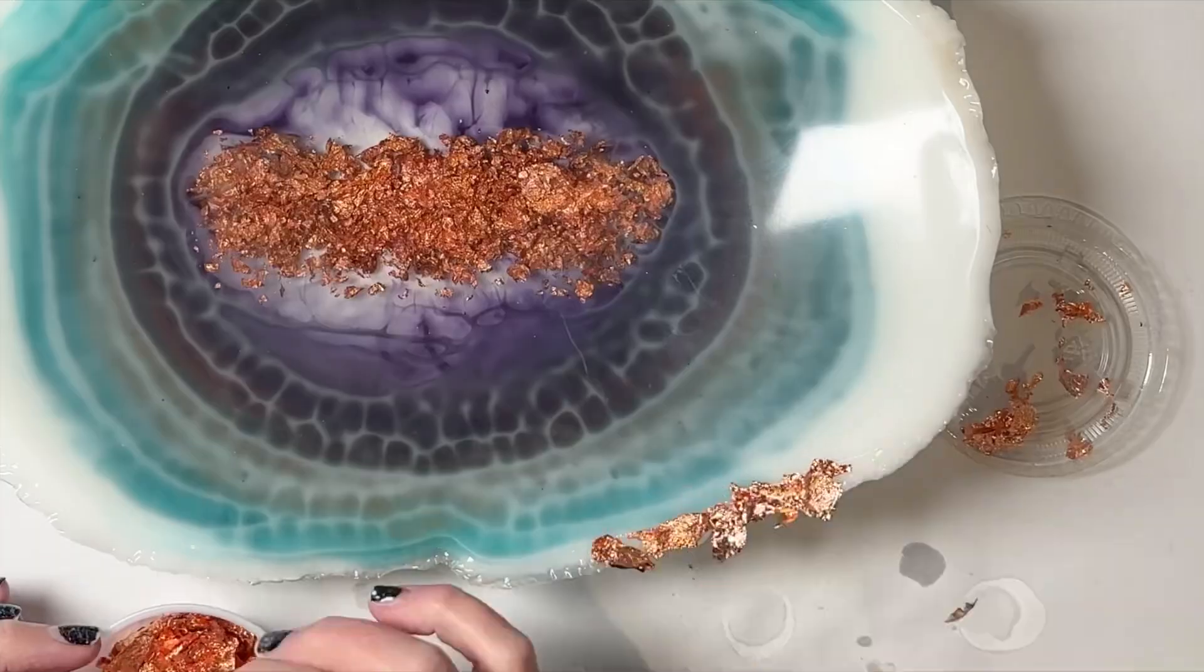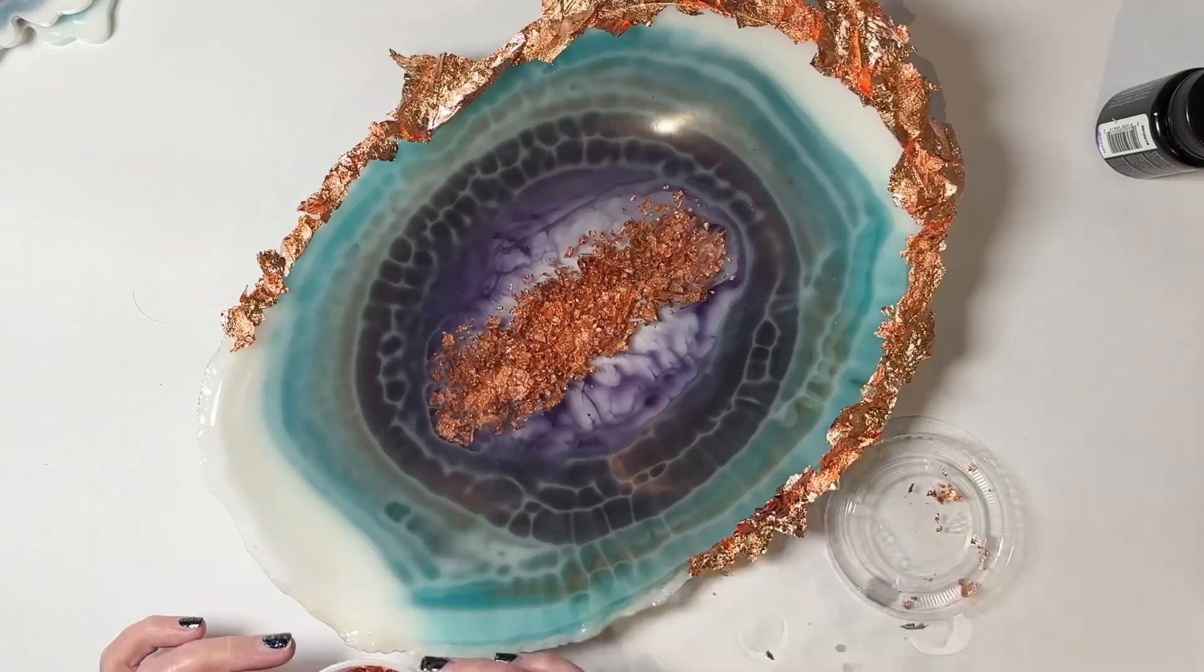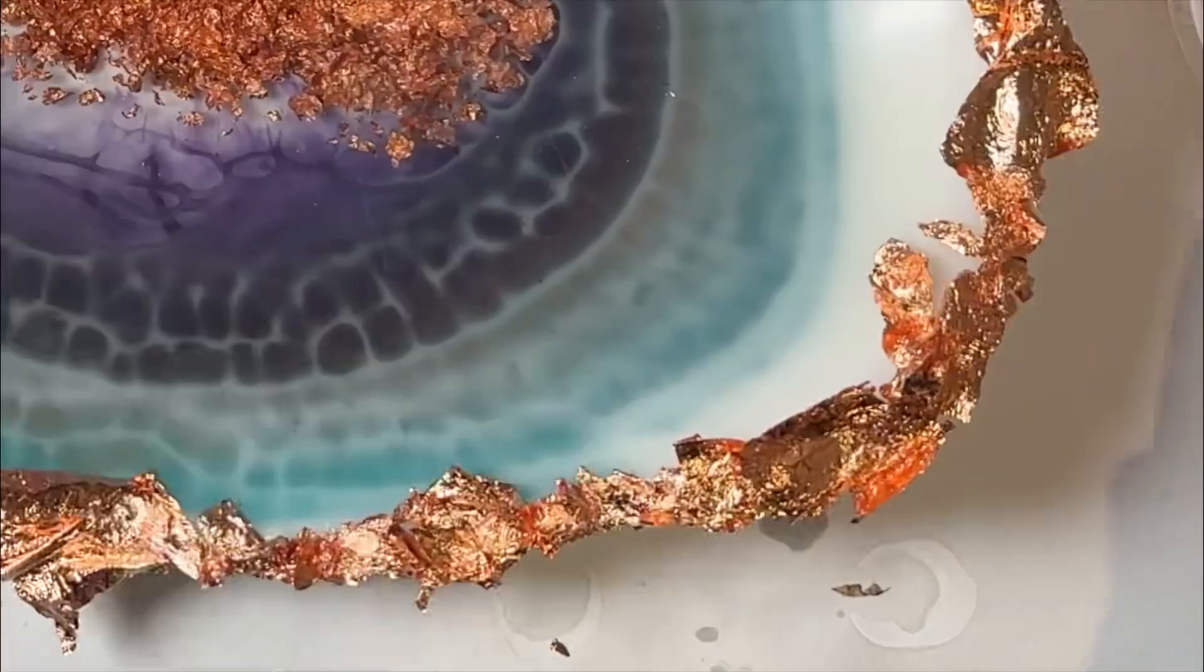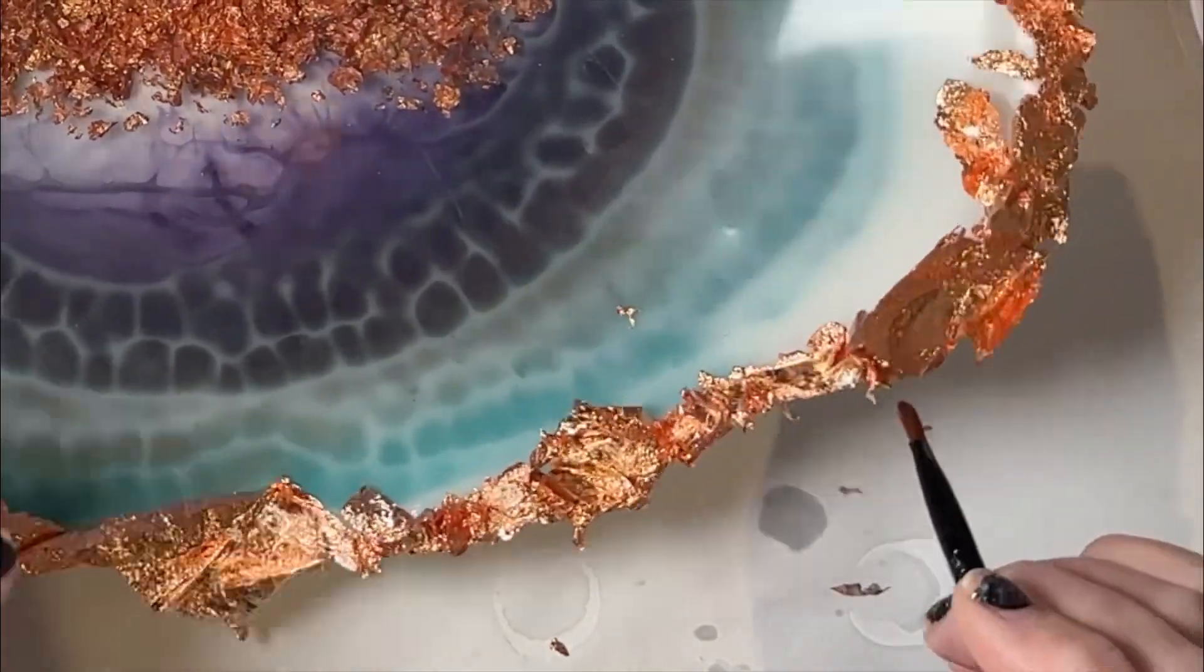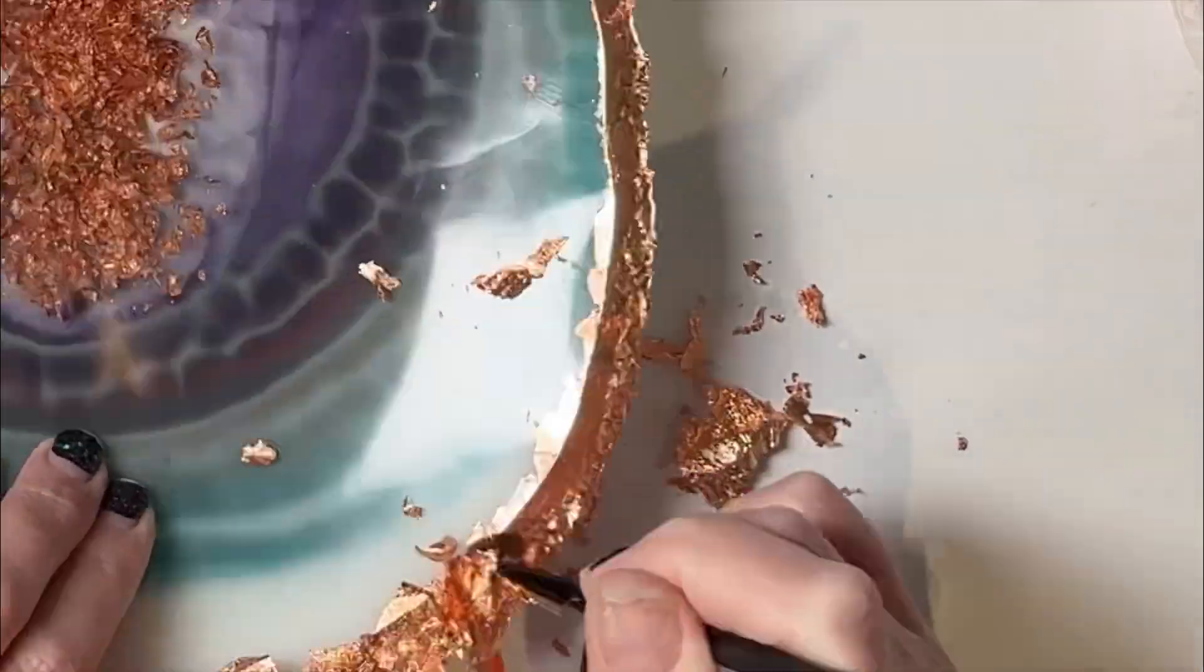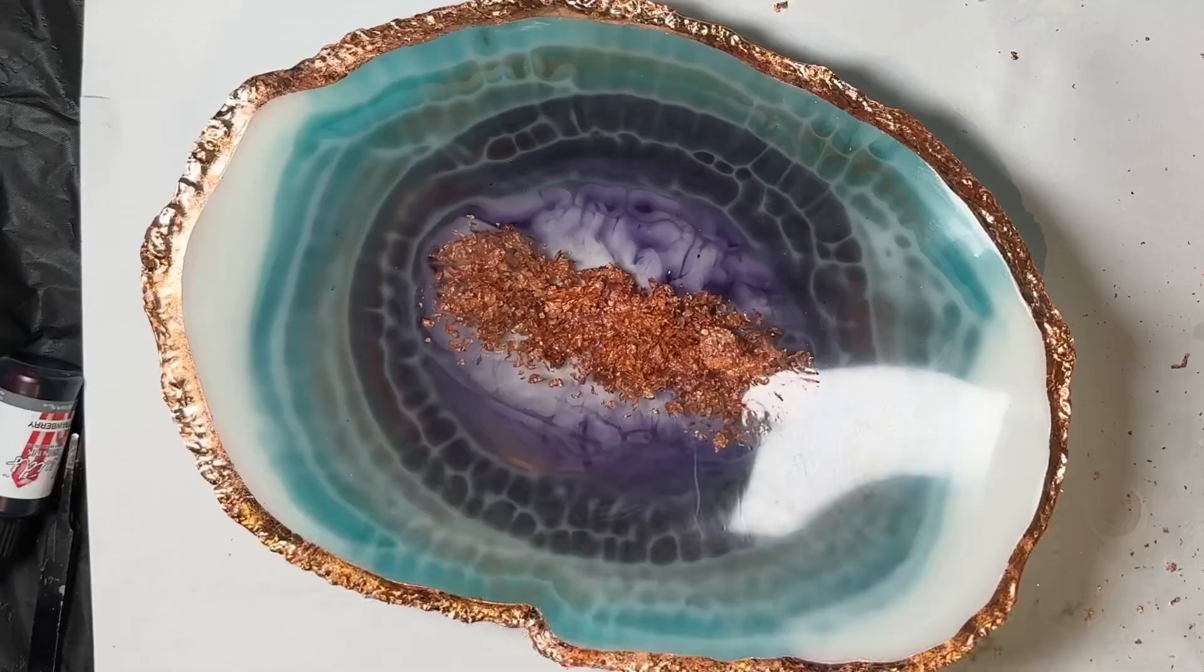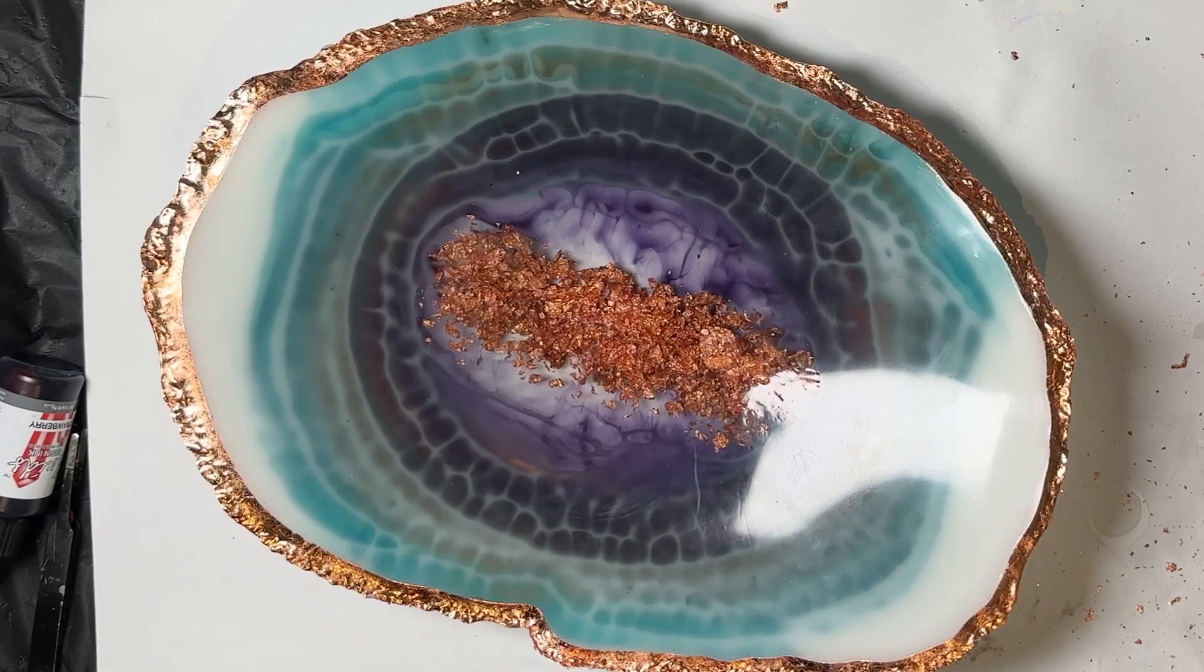I applied the leafing around the perimeter of the bowl where I had applied the glue, then went over that with a paintbrush to remove any of the excess. I went around the entire bowl and that was all done.